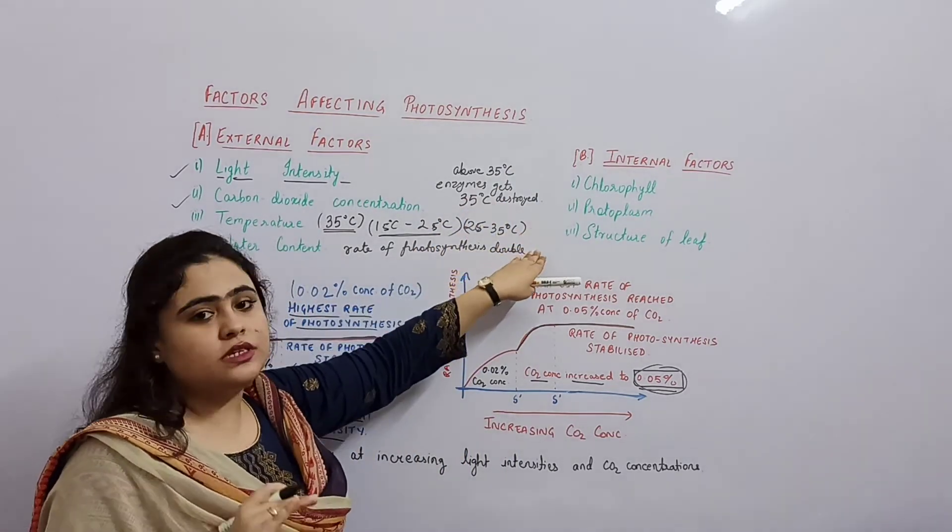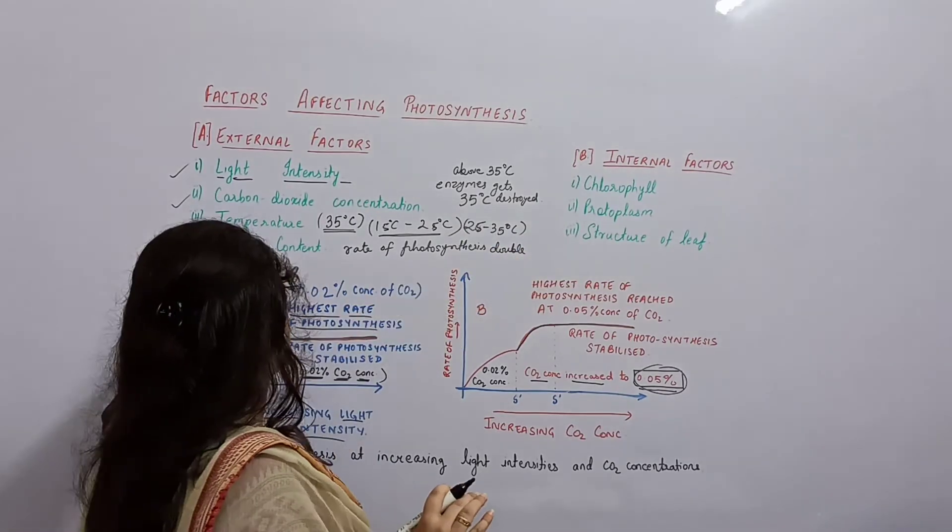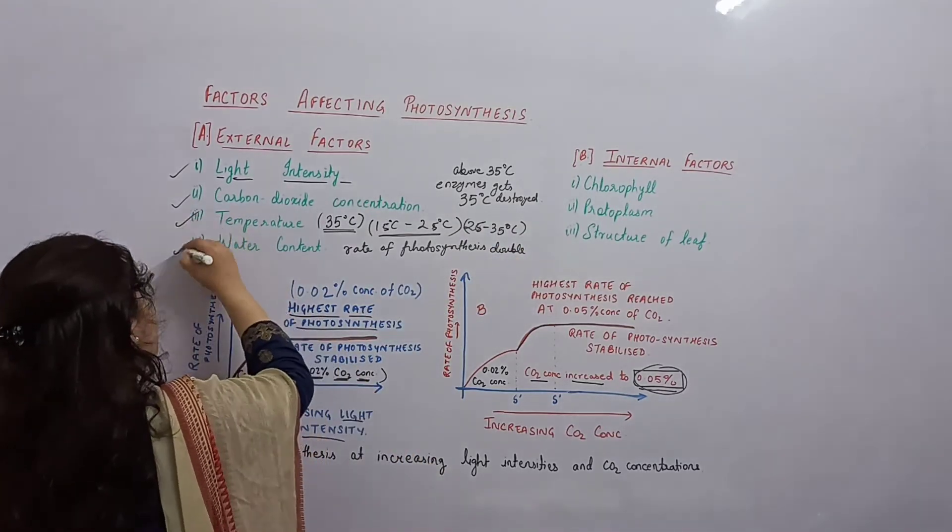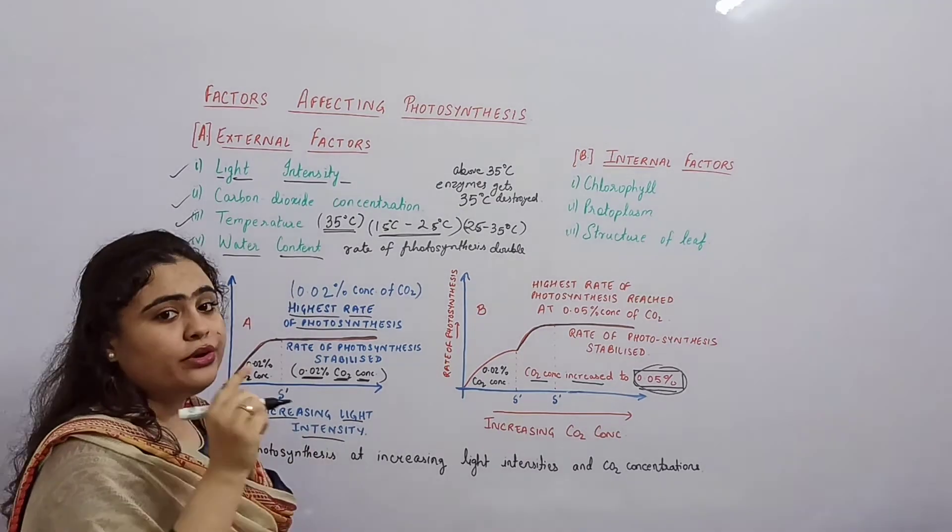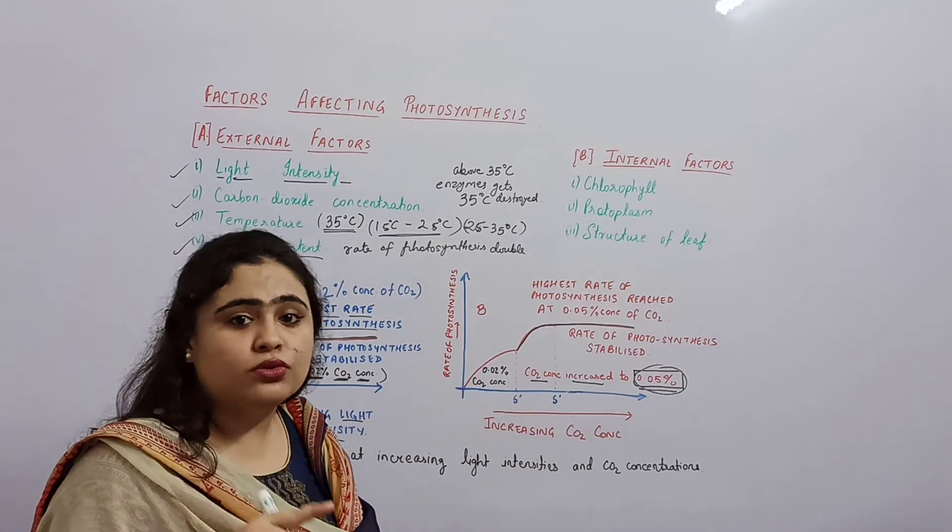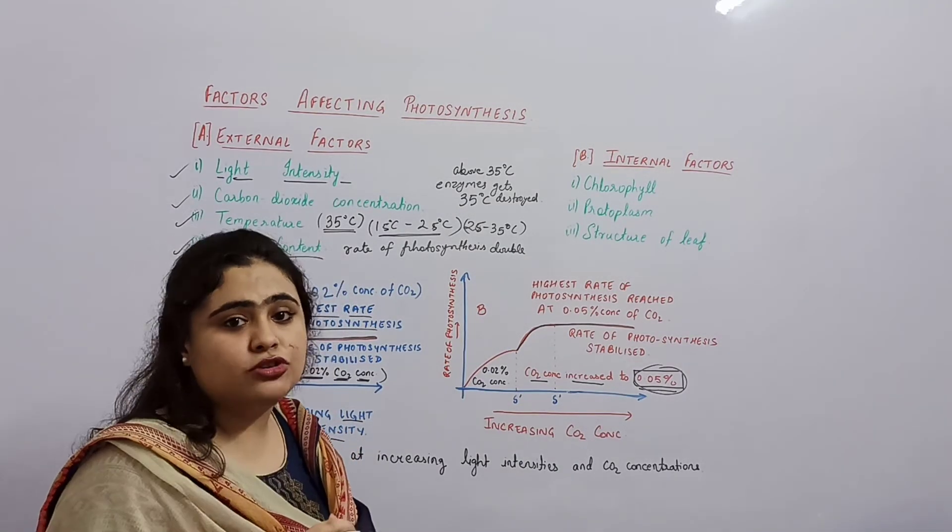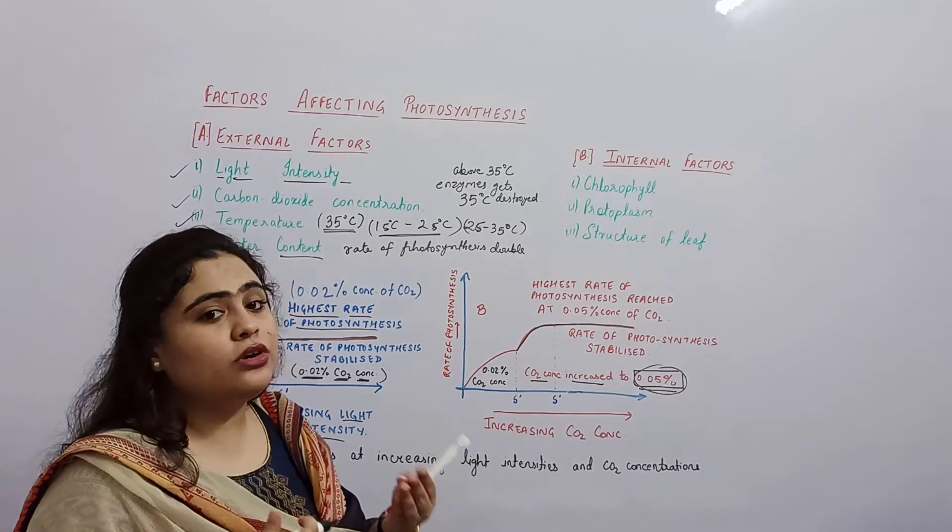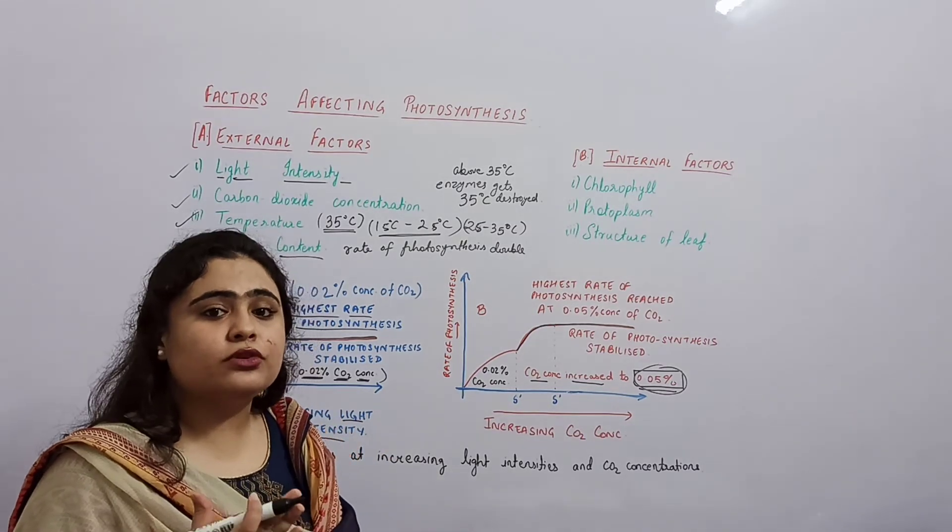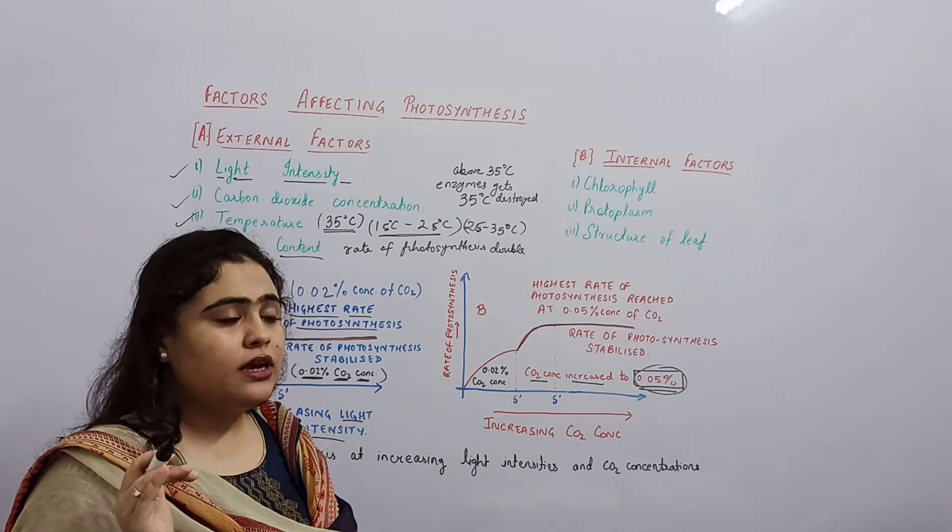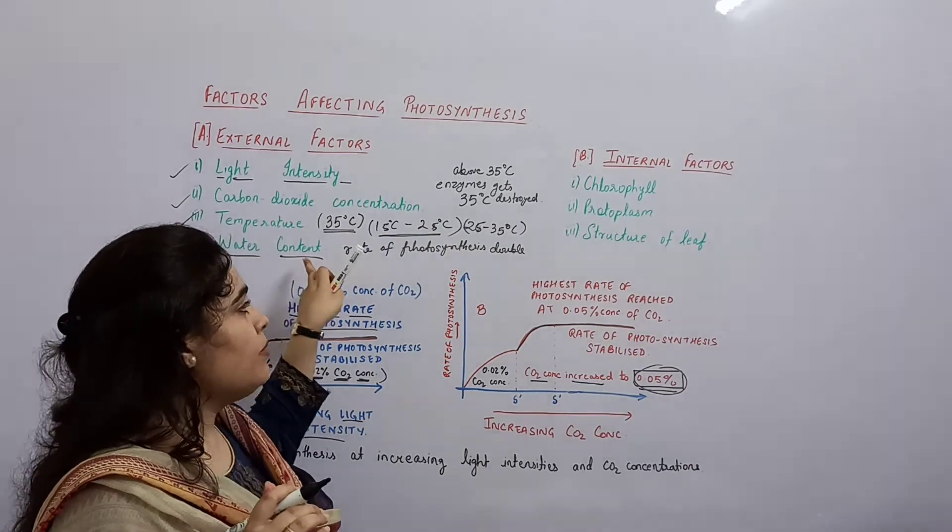Next condition is water content. If water content becomes less or due to insufficient absorption of water through roots, then rate of photosynthesis will decrease. But if water is absorbed properly, then rate of photosynthesis will increase. It depends on water content.